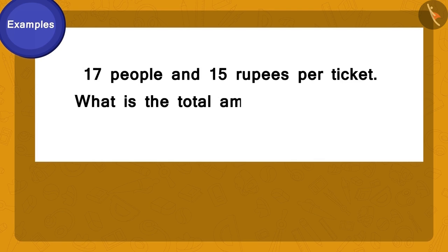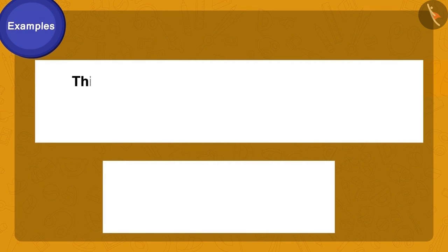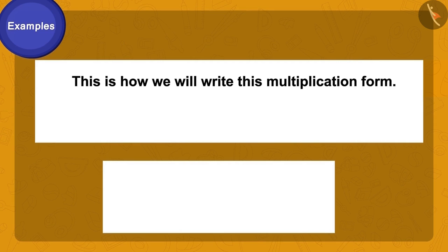Raju and Bablu are unable to calculate how much money they will have to pay to buy the required number of tickets.